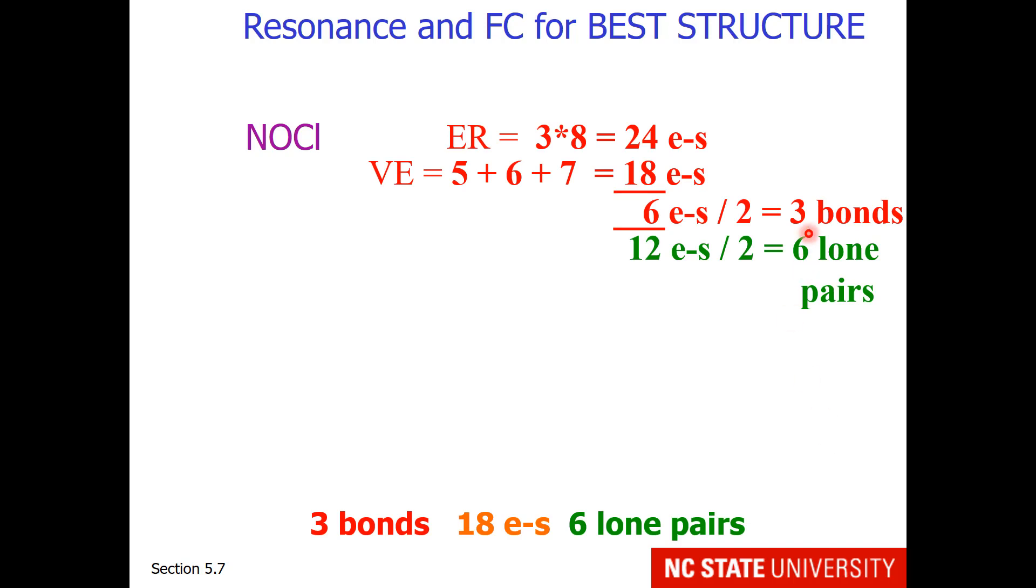When one does the math, the structure has 3 bonds and 6 lone pairs. Nitrogen goes in the middle. Here is one possible structure where we have a single bond to the oxygen and a double bond to the chlorine, and the octet rule is satisfied for all atoms.